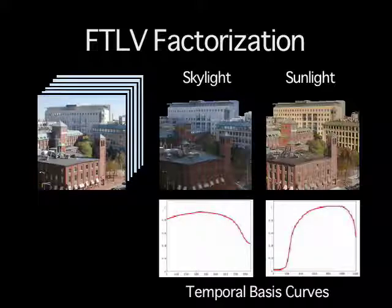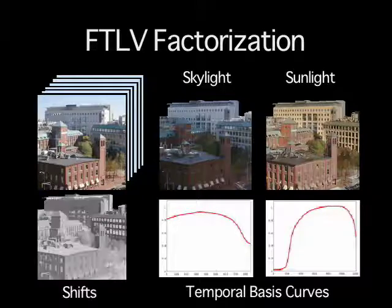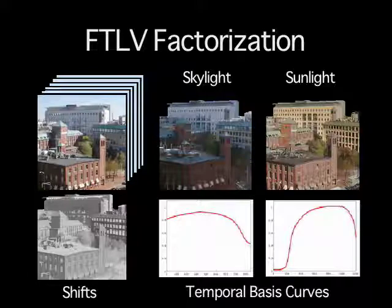The factorization also produces two basis curves that describe the temporal characteristics of skylight and sunlight, and an image with per-pixel shifts of these basis curves that correspond to surface normals of objects in the scene.